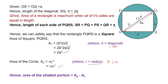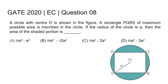The area of the shaded portion equals the area of the circle minus the area of the rectangle. Substituting the values: shaded area = πa² − 2a². Hence, the answer to question number 8 is option C: πa² − 2a².